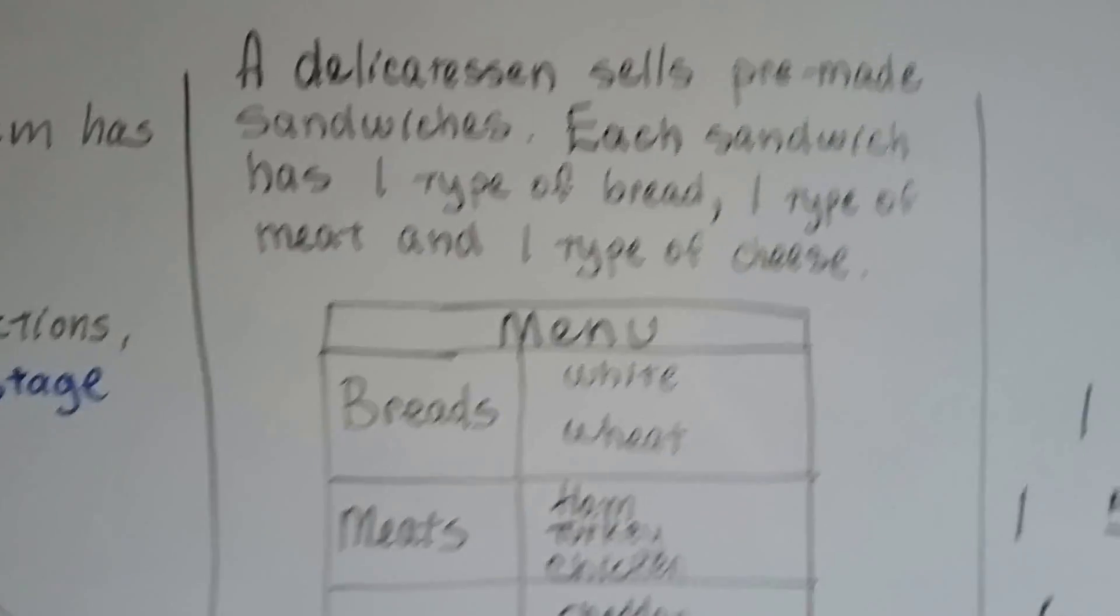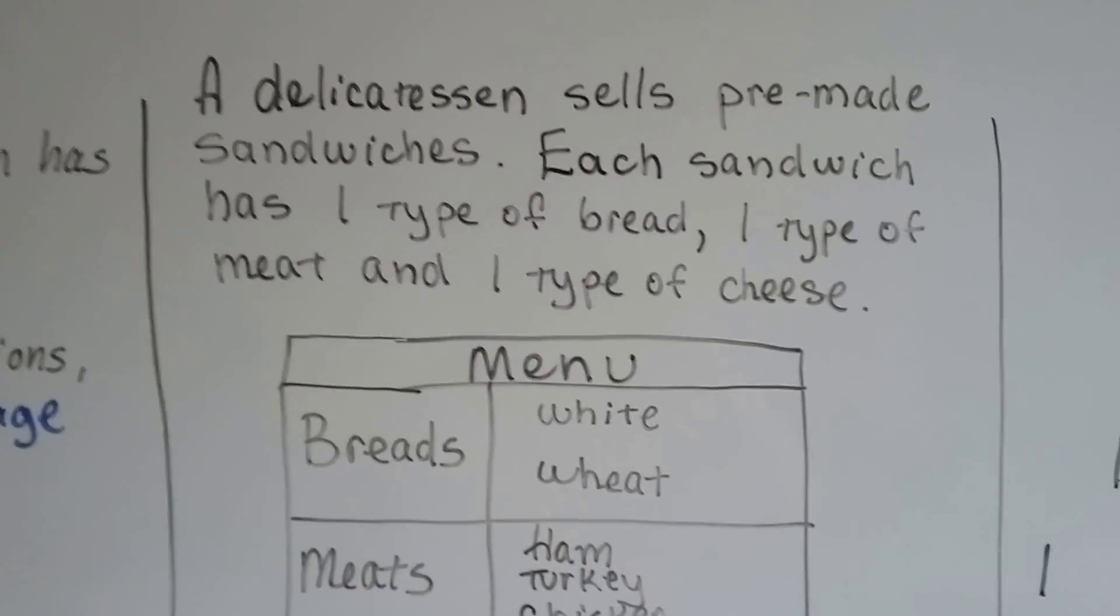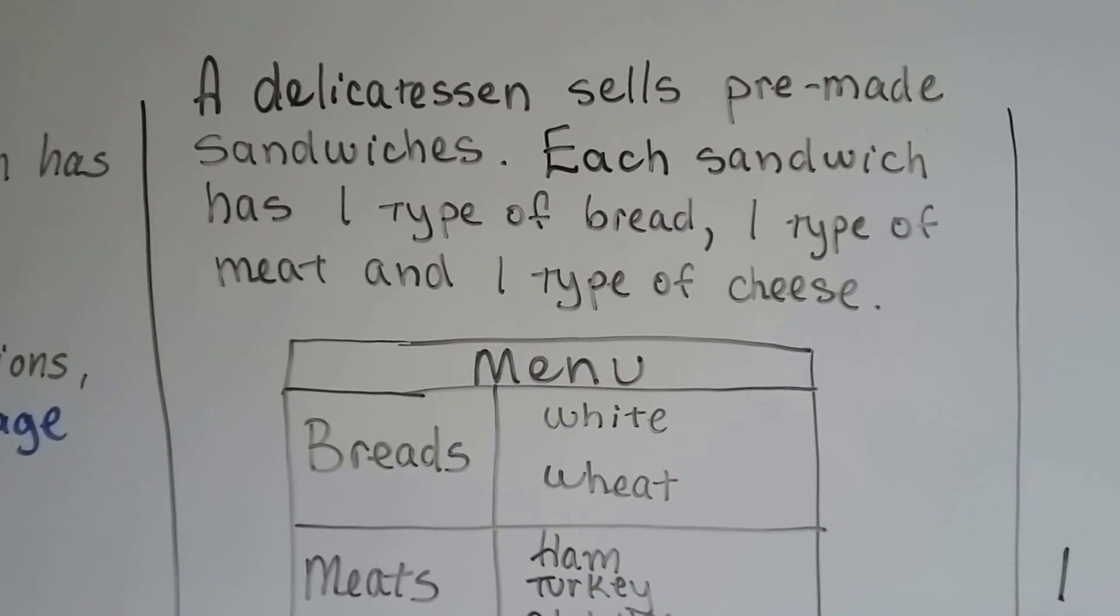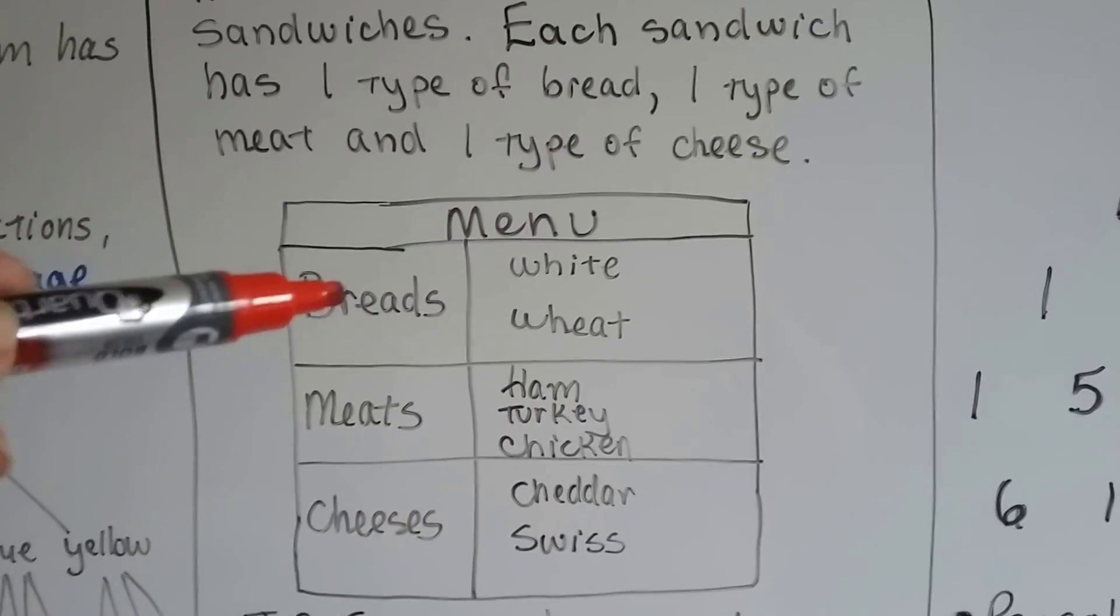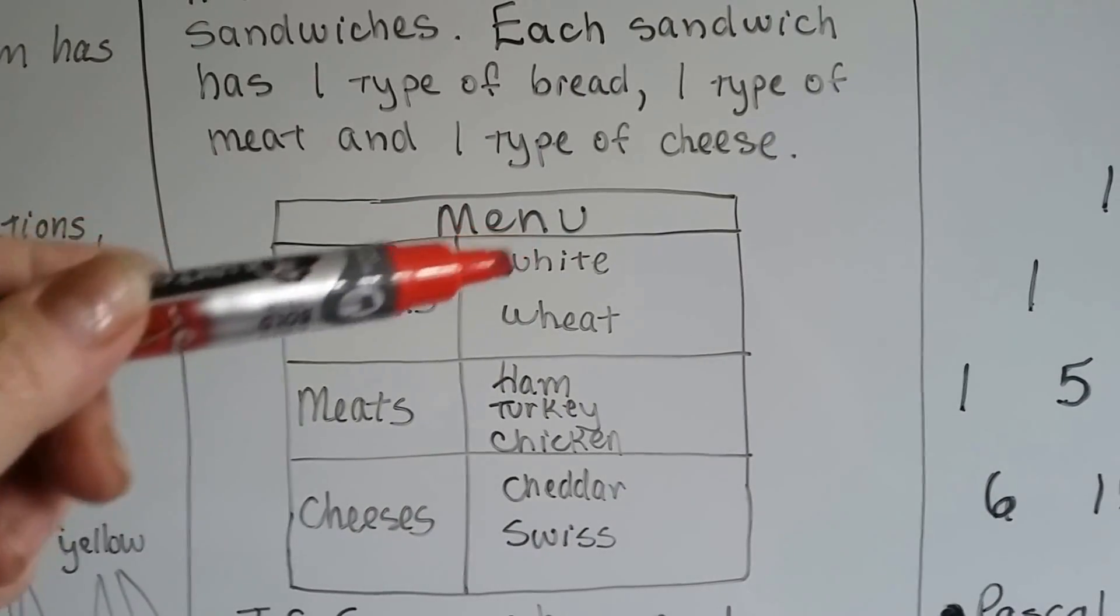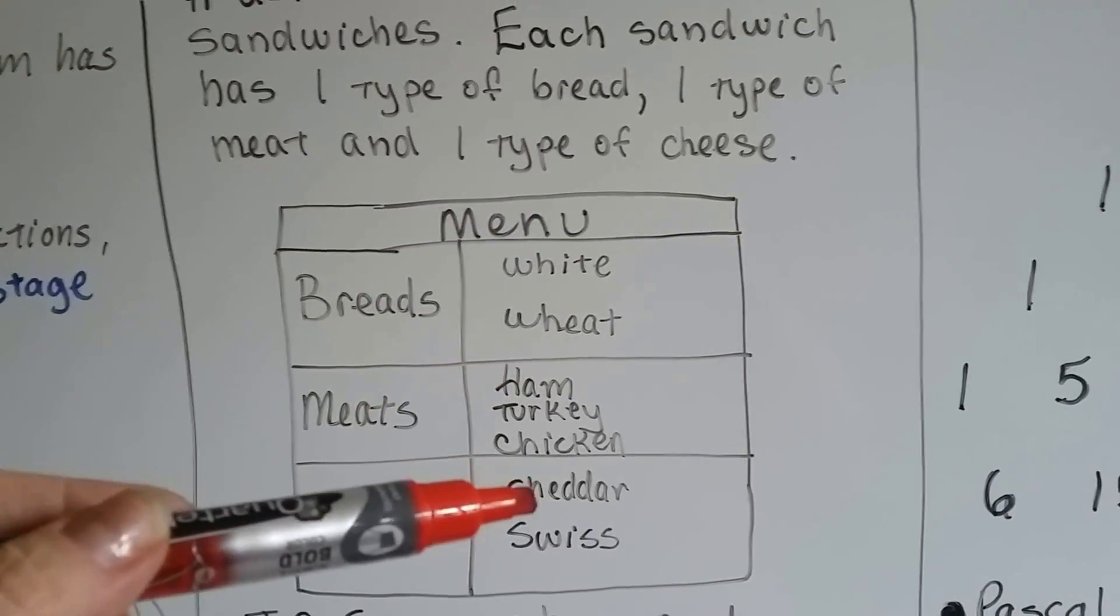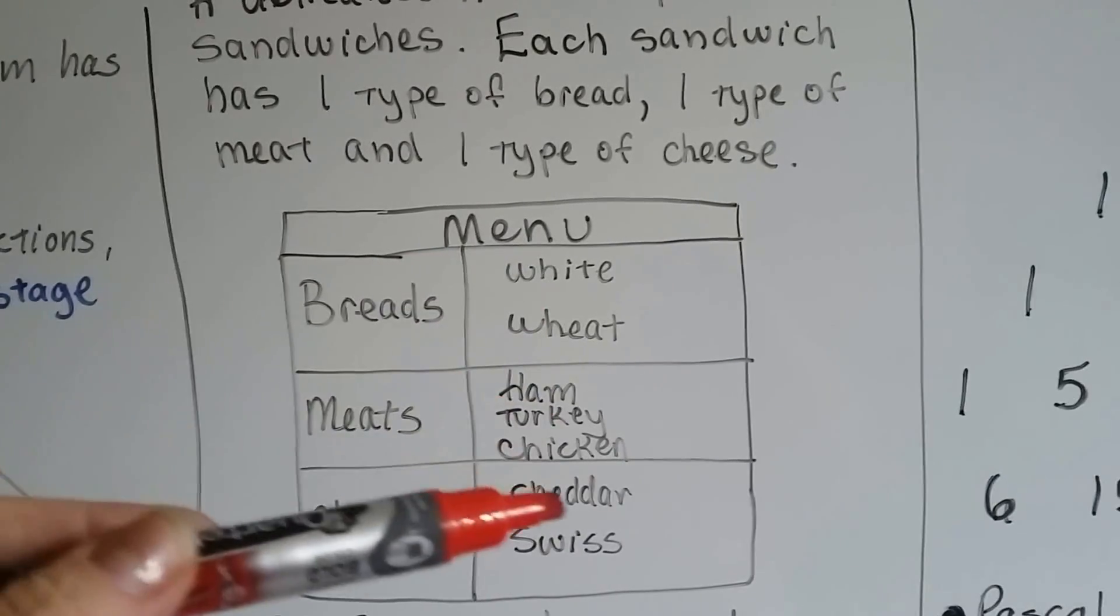Alright, a delicatessen sells pre-made sandwiches. Each sandwich has one type of bread, one type of meat, and one type of cheese. Here's the menu. So a sandwich could be, you know, white bread with ham with cheddar, or it could be white bread with turkey with cheddar.